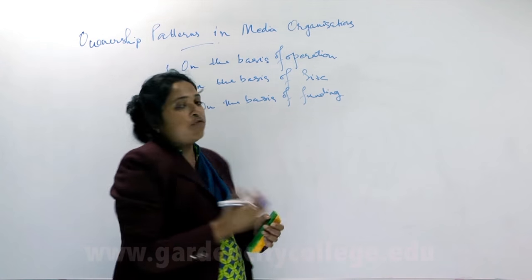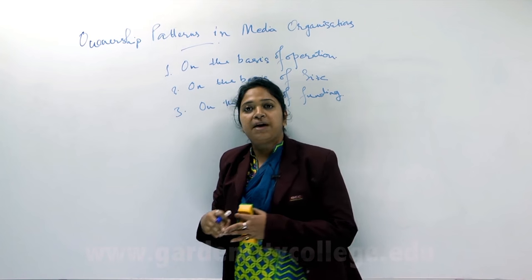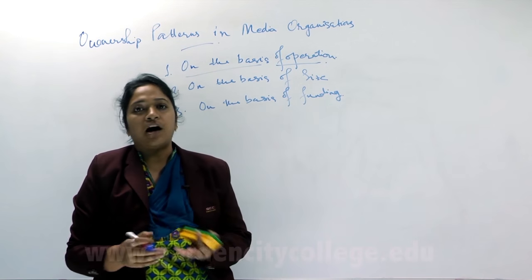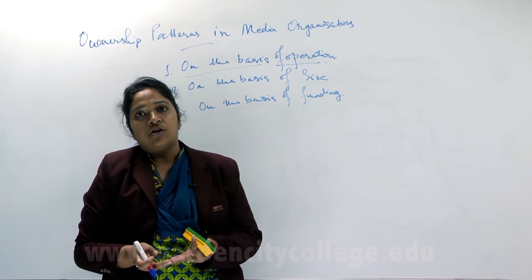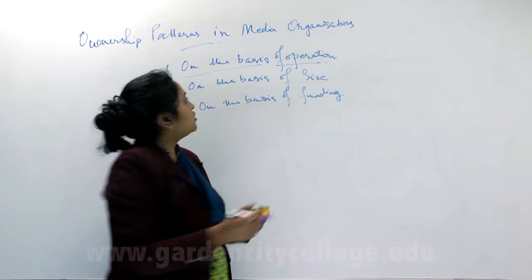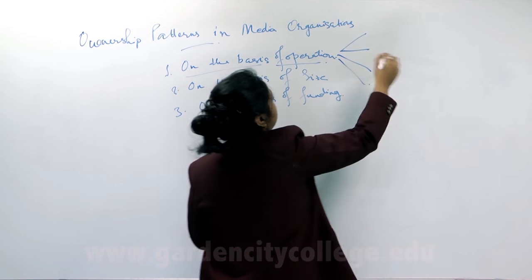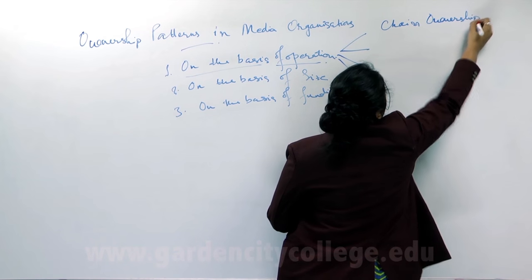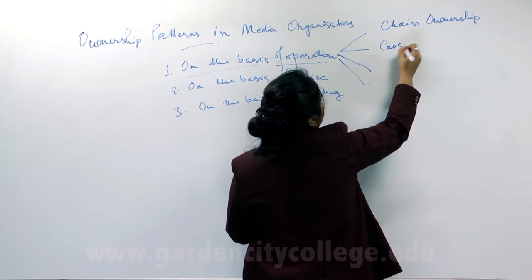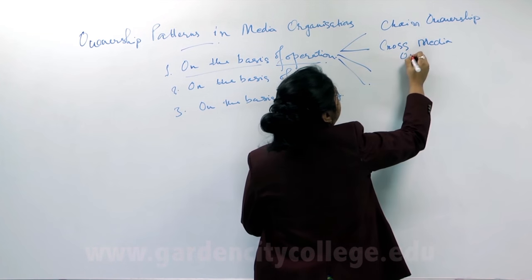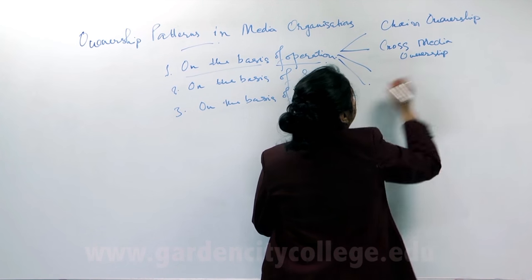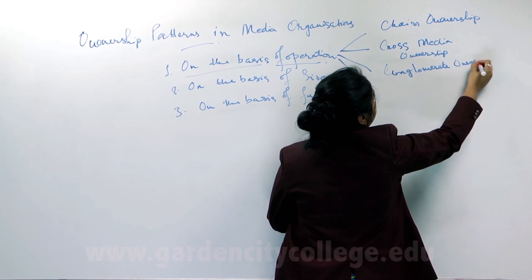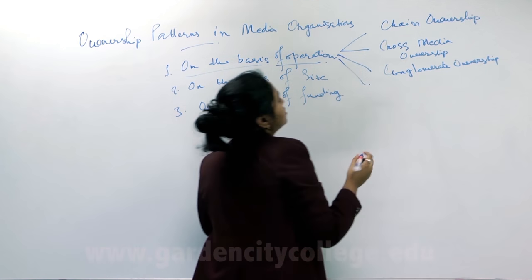On the basis of all this categorization in terms of ownership patterns, the most important one is on the basis of operation. Under this particular category, we see how the ownership pattern in media organizations functions according to various media types. Here we have four divisions: the first being chain ownership, second being cross-media ownership, third is conglomerate ownership, and fourth is vertical integration.